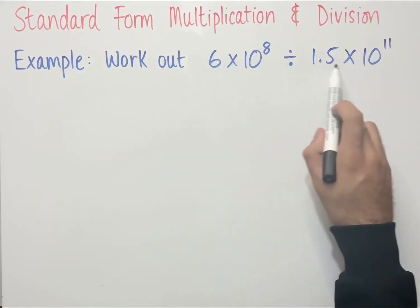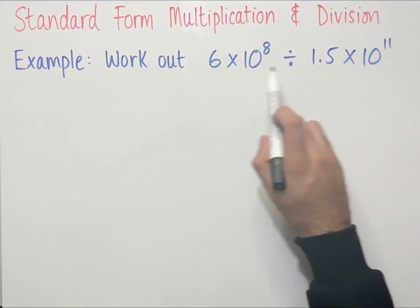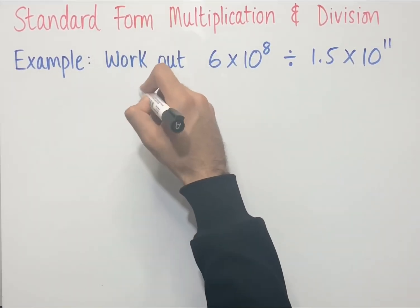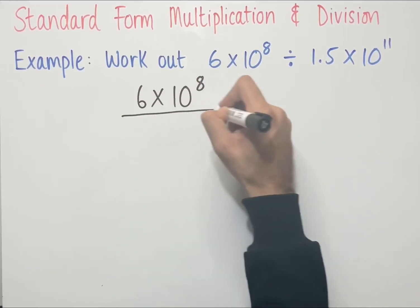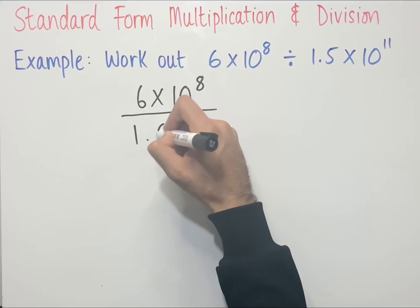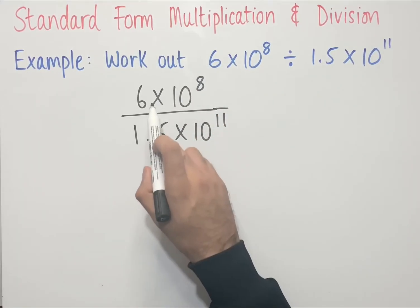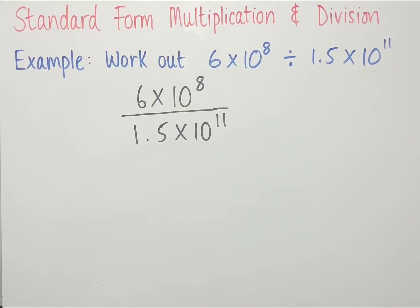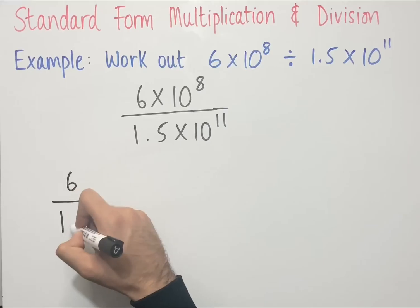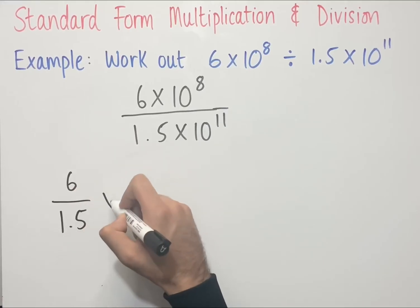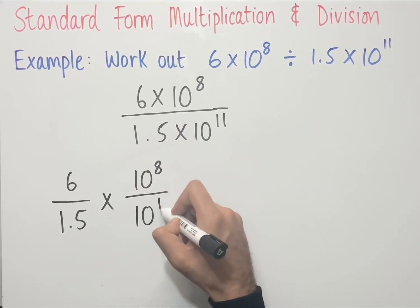Looking at an example of division now — remember the division symbol can be written as a fraction bar. So we can rewrite this as 6 times 10 to the power of 8, all over 1.5 times 10 to the power of 11. We can then split this fraction into two separate fractions: 6 over 1.5, multiplied by 10 to the power of 8 over 10 to the power of 11.